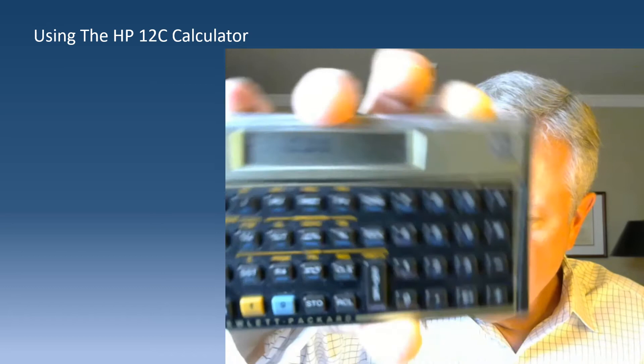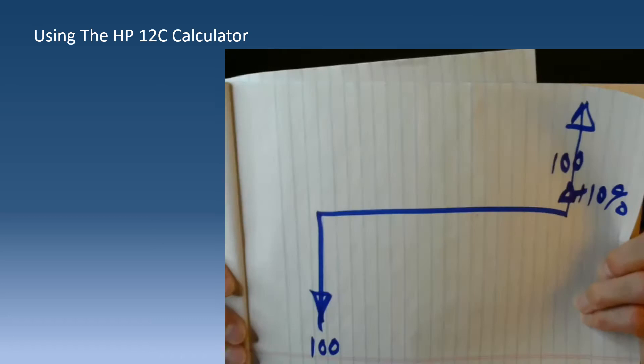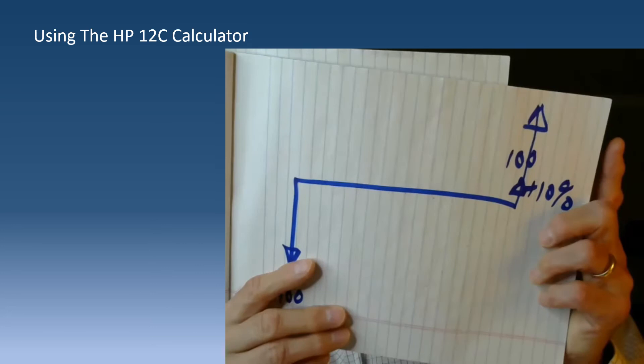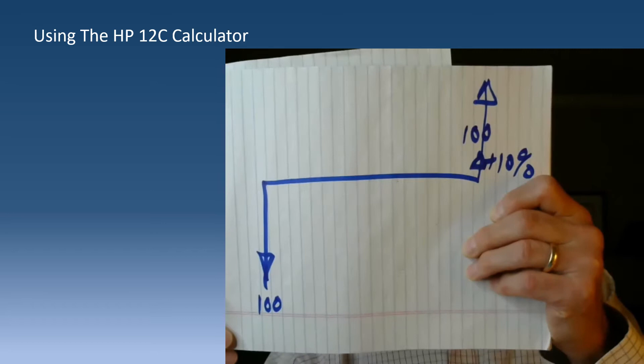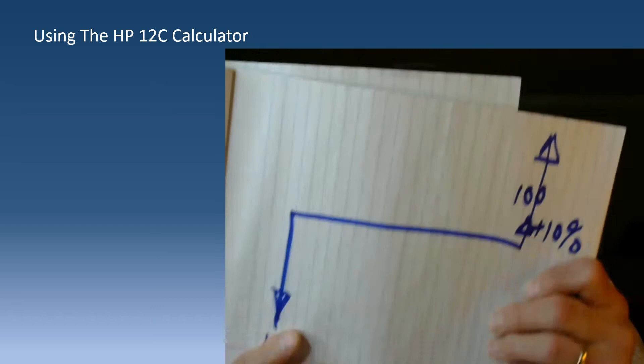Notice it shows the result as negative. It does that because it works like a vector. In the example, it assumes the $100 at the beginning is an outflow. At the end you get $100 back plus your 10% interest. It's designed so that inflow and outflow are in opposite directions - one negative, one positive. When you're doing time value of money problems you'll need to account for this.